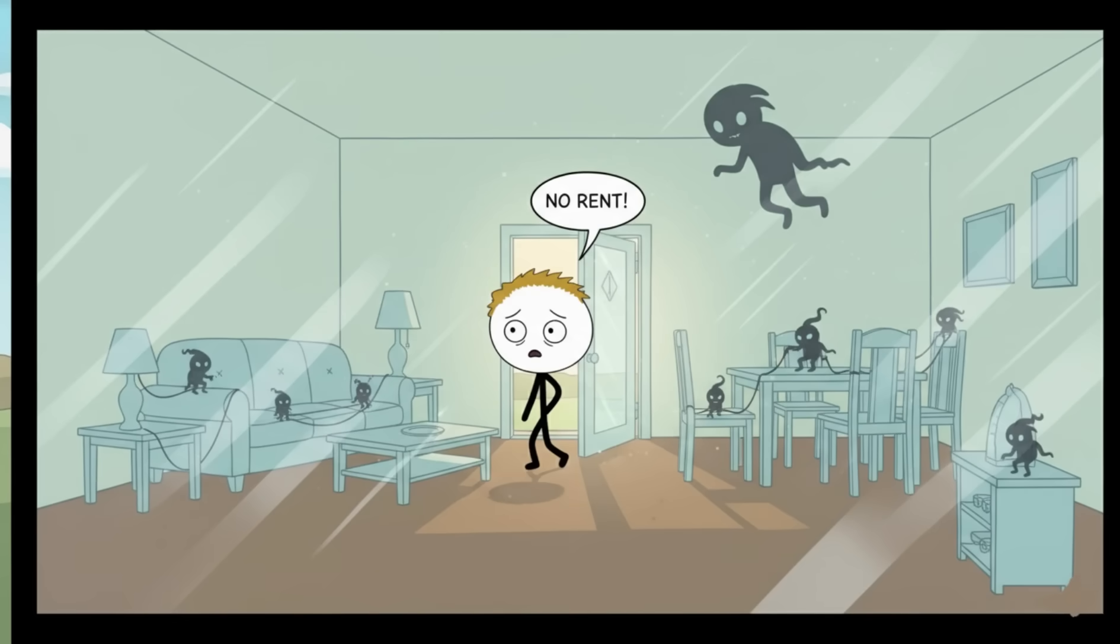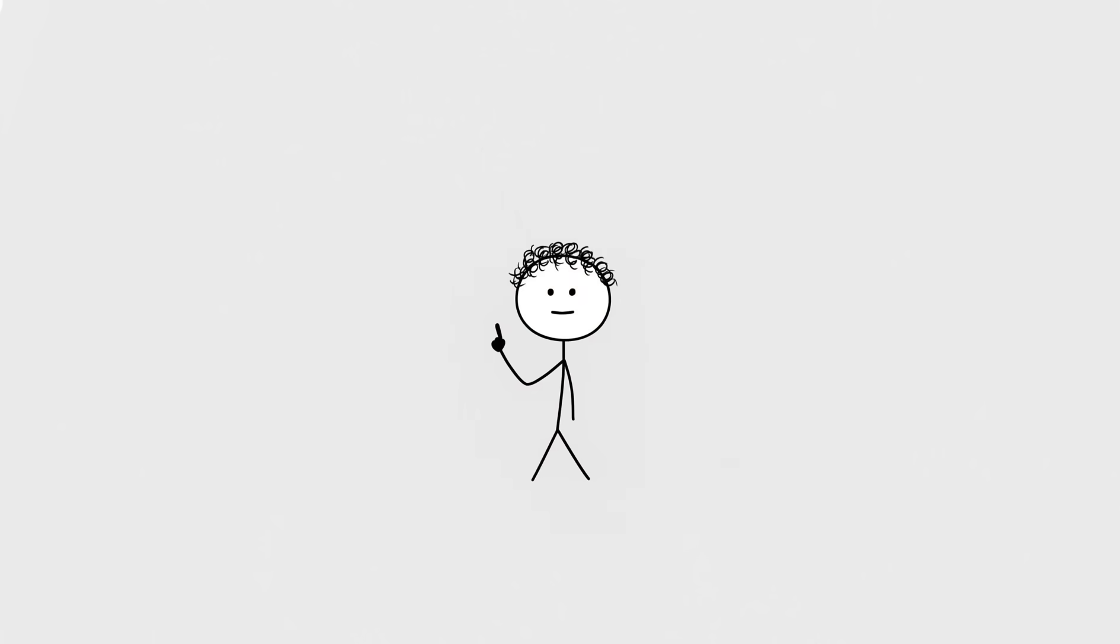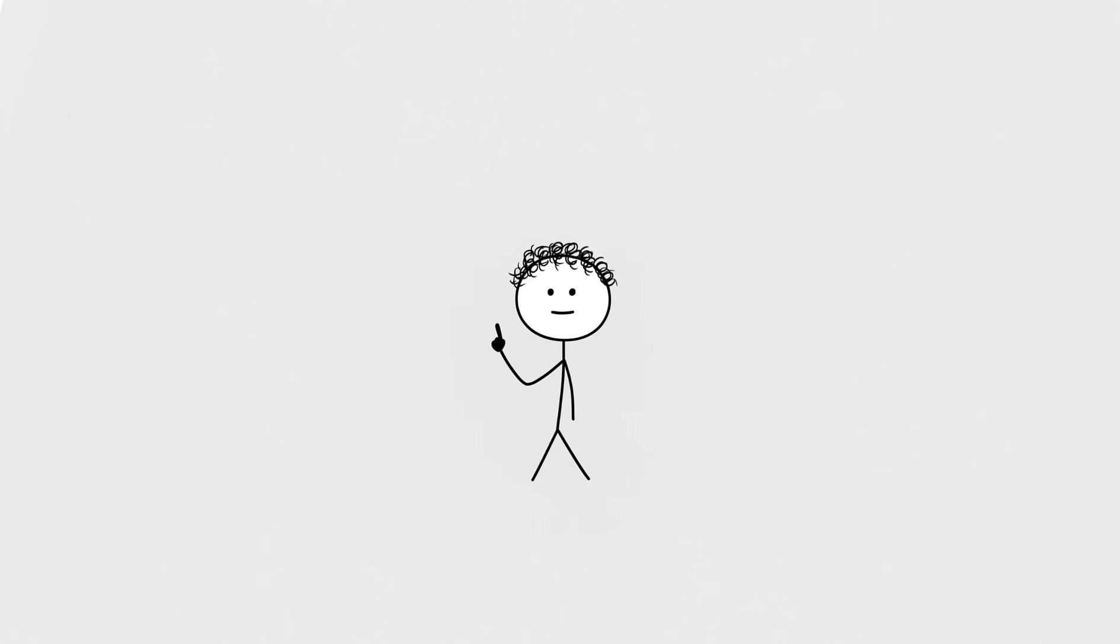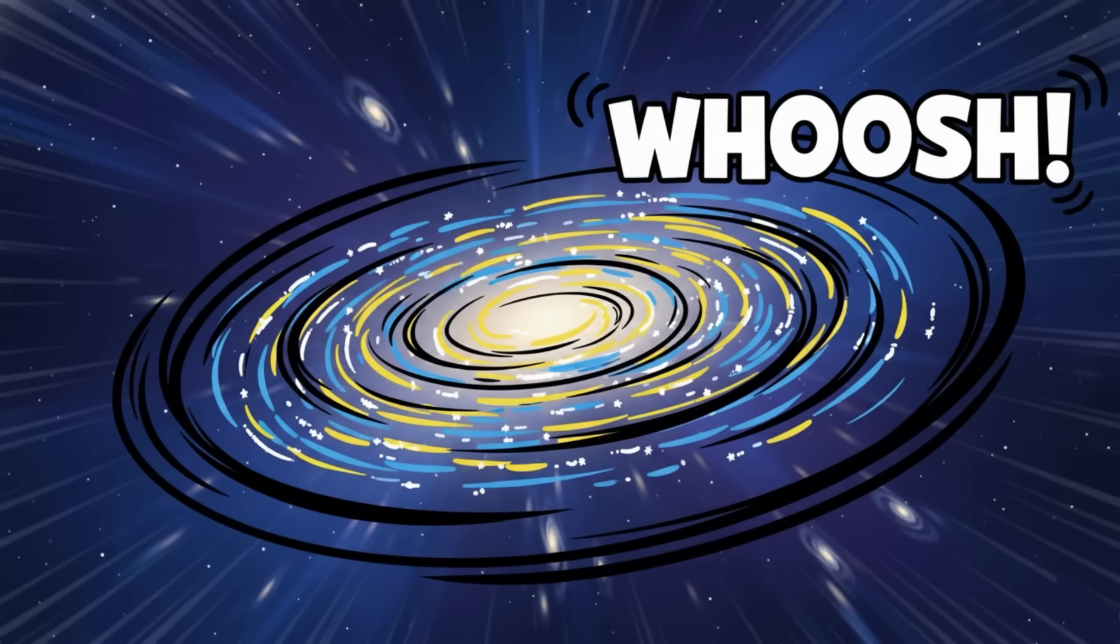Number four: dark matter shenanigans. Imagine walking into your house and realizing that 95% of everything in it is invisible, untouchable, silent, and refuses to pay rent, but somehow still controls the structure of the entire place. That's the universe, except instead of a house it's reality, and instead of a freeloading roommate it's dark matter. Here's the problem: galaxies spin way too fast.